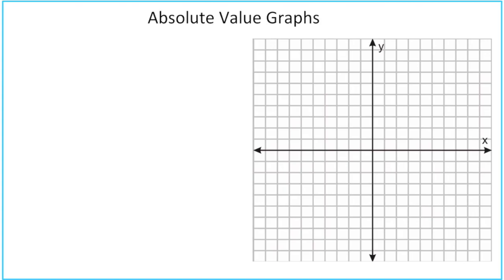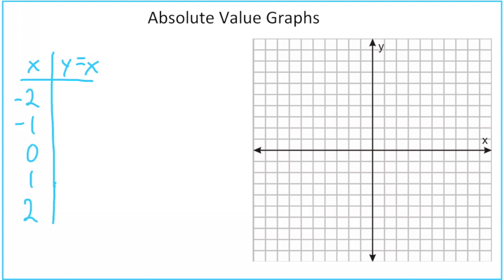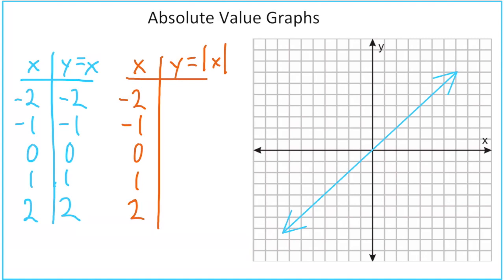In this video we're going to take a look at absolute value graphs. We're actually going to start with what should be the easiest graph: y equals x. This is not absolute value, this is just a line. We can graph it using a slope of 1 and a y-intercept of 0, but I'm going to set up a table instead, going from negative 2 to positive 2. The y values are the same as x, so when we graph this, here's our line.